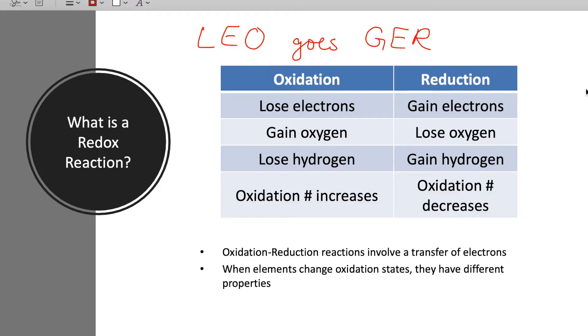The reason why we care about losing or gaining electrons is because it actually changes the properties of substances if they have different numbers of electrons. A classic example would be sodium. Sodium zero with all of the normal electrons it's supposed to have is a solid metal but sodium one plus meaning it's lost one electron is an ion that dissolves in solution and is found in salt sodium chloride. So very different properties based on the number of electrons that they have.